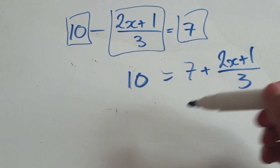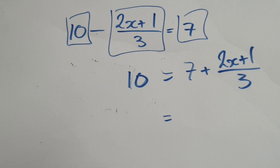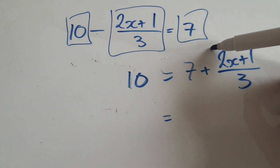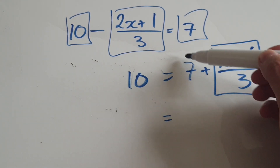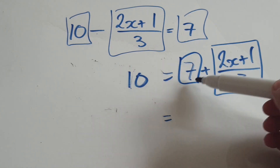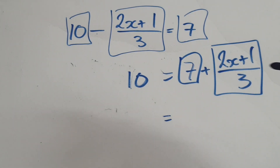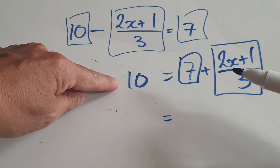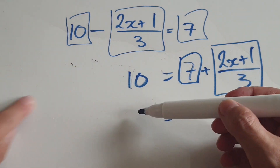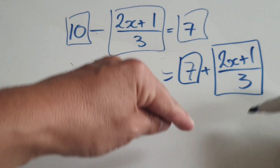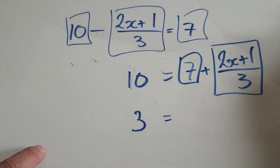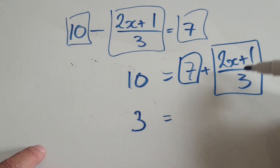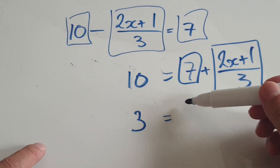Now your eyes should zoom into the x again — you want to get x on its own. The good thing is that x is already positive, so you should kill off this seven. In your mind, take away seven from both sides. 10 take away seven would be three, and taking away seven here would just kill off this seven.